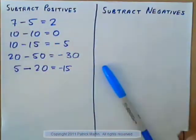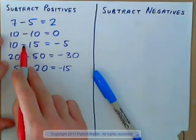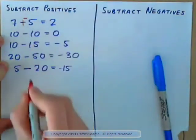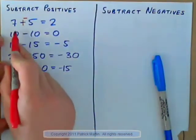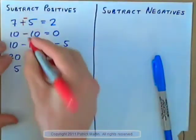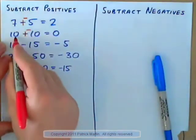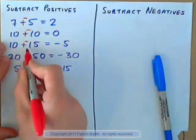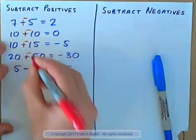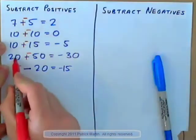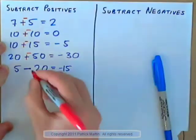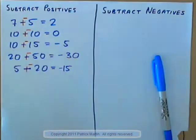Another way to look at it: we can change subtracting to adding the opposite. So 7 minus 5 becomes 7 plus negative 5 — 7 good guys, 5 bad guys, 2 good guys. 10 plus negative 10: 10 positives and 10 negatives makes 0. 10 plus negative 15: 10 positives and 15 negatives makes negative 5. 20 plus negative 50: 20 positives and 50 negatives makes negative 30. 5 plus negative 20: 5 positives and 20 negatives makes negative 15.